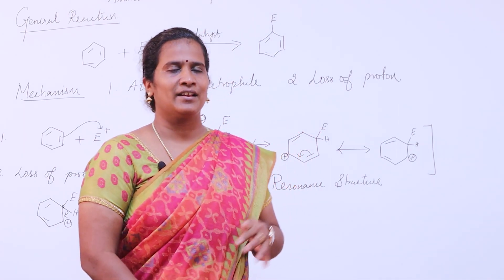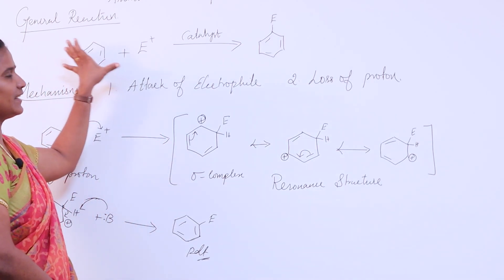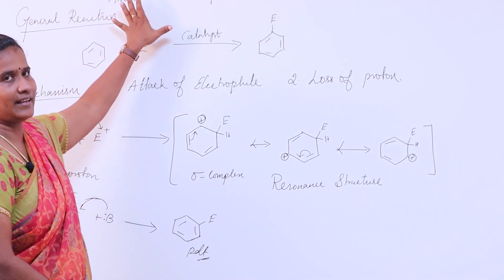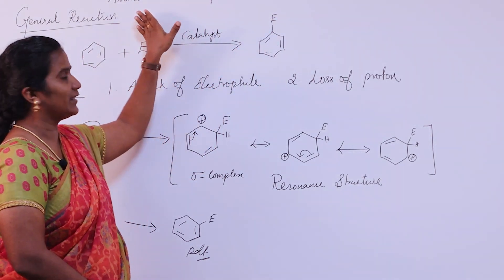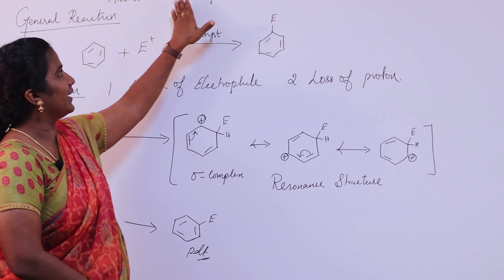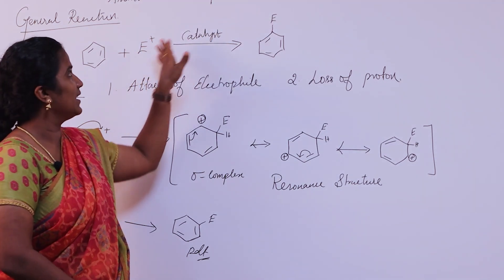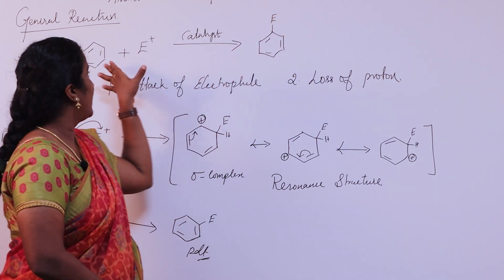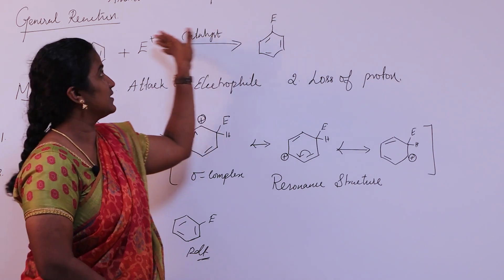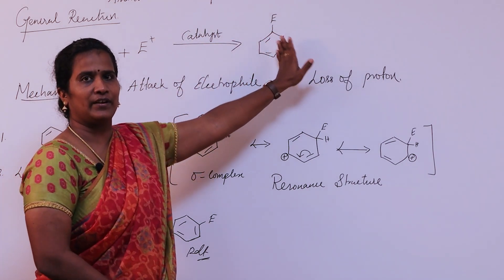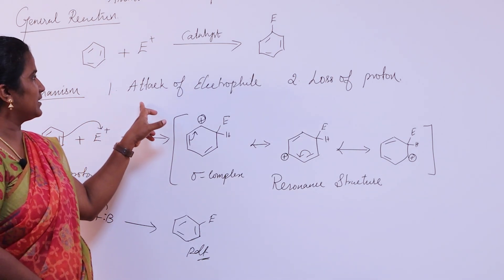We will look at the reaction and general mechanism. The title is aromatic electrophilic substitution reaction. 'Aromatic' refers to the benzene ring. The electrophile is an electron-loving species, denoted as E+. 'Substitution' means the benzene ring is substituted by the electrophile. This is the aromatic electrophilic substitution reaction.